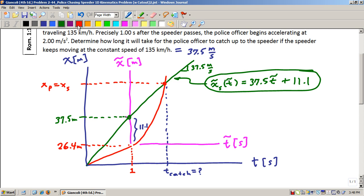As for the other curve, this is a second-order curve. We get that from the equations of kinematics, and we'll find that X-tilde of the police officer as a function of T-tilde time